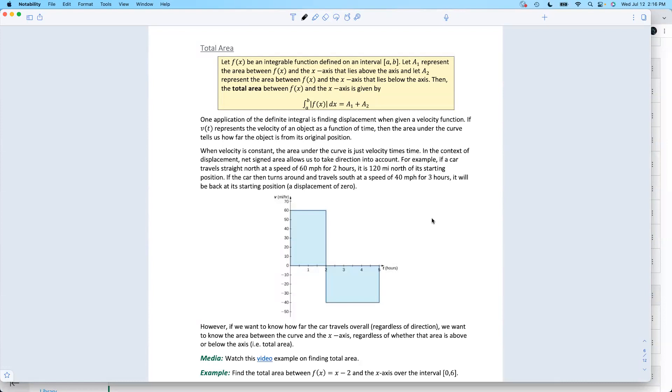And the classic example here, we'll do a couple examples like this, is distance. When I'm measuring somebody's distance, I don't care which direction they moved in. If I walk a mile to the store and a mile back, I started and ended at the same place. My total displacement would be zero, but my distance would be two miles.